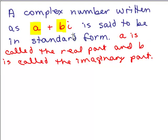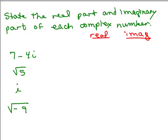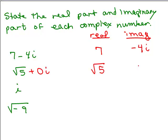A complex number written as a plus bi is said to be in standard form. a is called the real part and b is called the imaginary part. Put the video on pause and identify the real and imaginary parts of each complex number. In the first one, the real part is 7 and the imaginary part is negative 4 — it's the coefficient of i. For the second, there's no i, so the real part is square root of 5 and the imaginary part is 0. For the third, it could be written as 0 plus 1i, so the real part is 0 and imaginary part is 1.